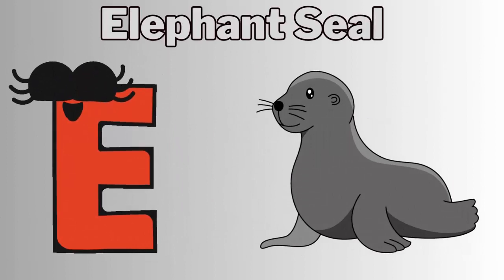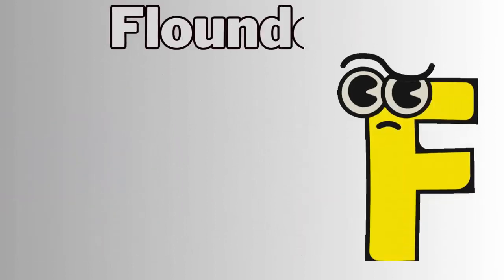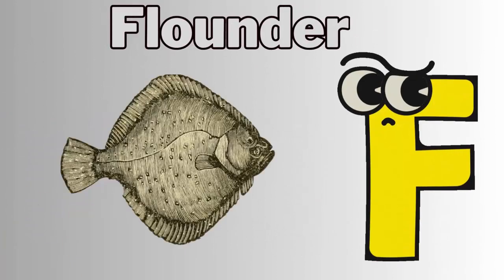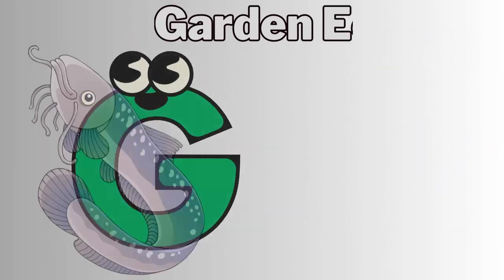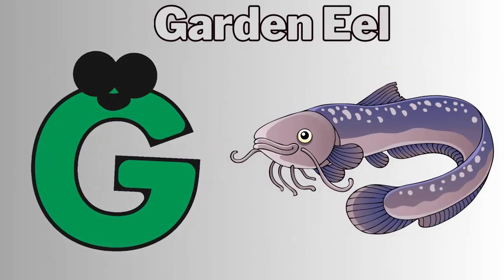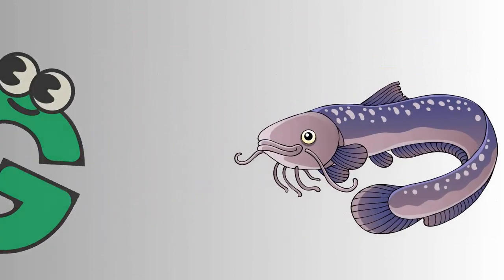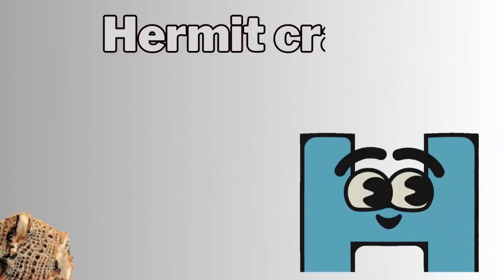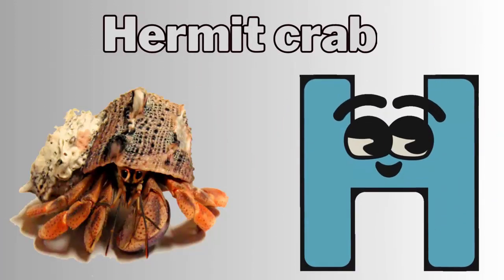E. E for elephant seal. F. F for flounder. G. G for garden eel. H. H for hermit crab.